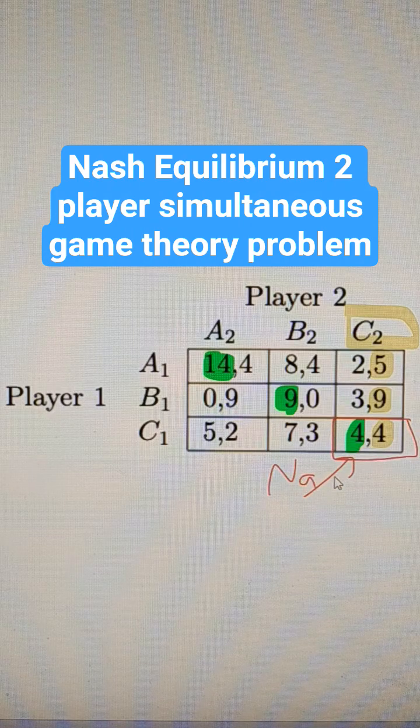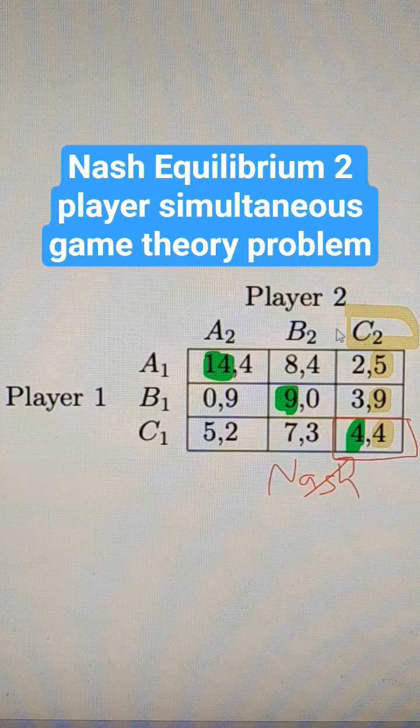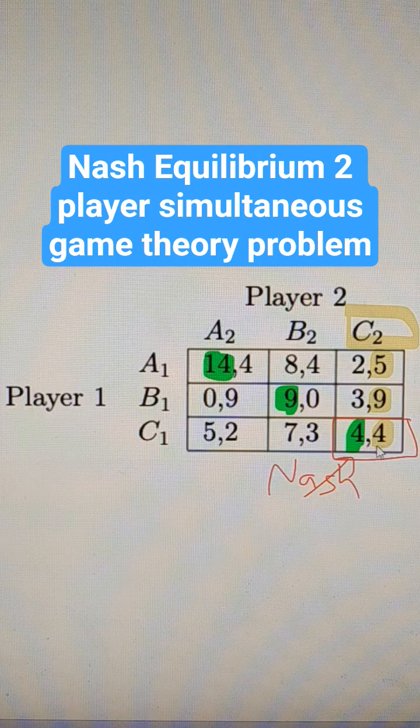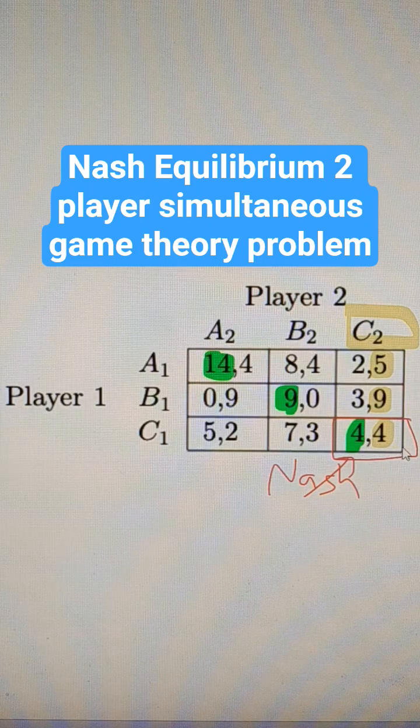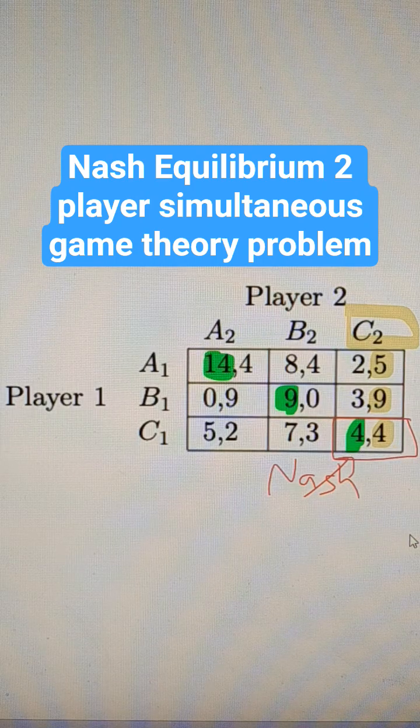This is our Nash equilibrium. This is a prisoner's dilemma because there are better outcomes over here, but when they act competitively, we're going to end up getting a lower payout for both players than we would if we acted cooperatively.